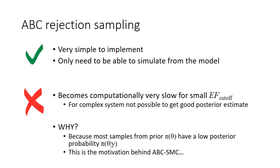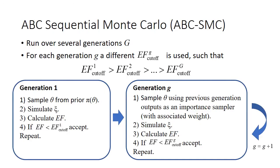Tackling this shortcoming is the motivation behind the next method. ABC sequential Monte Carlo, or ABC SMC for short, is run over several generations. For each generation, a different error function cutoff is used. This cutoff is successively reduced until the final generation which is used for the eventual posterior samples. Generation 1 works in exactly the same way as the rejection algorithm described before: a sample theta is taken from the prior, a system state xi is simulated, the error function is calculated, and the sample is accepted if its error function is less than the cutoff for generation 1.